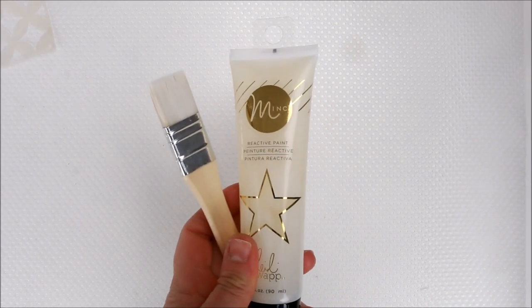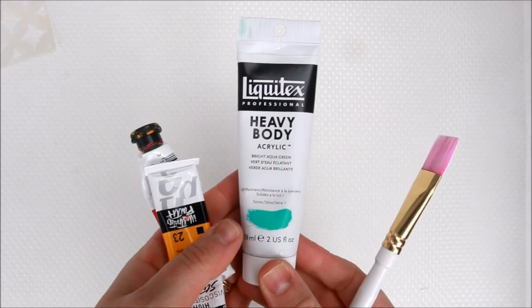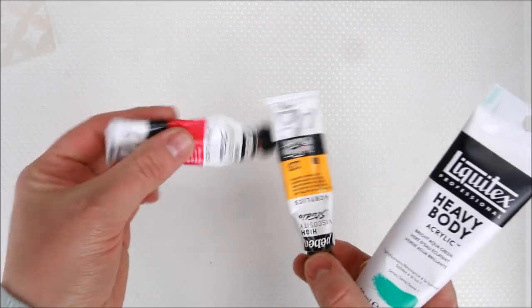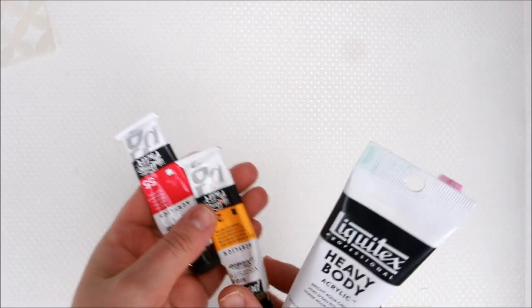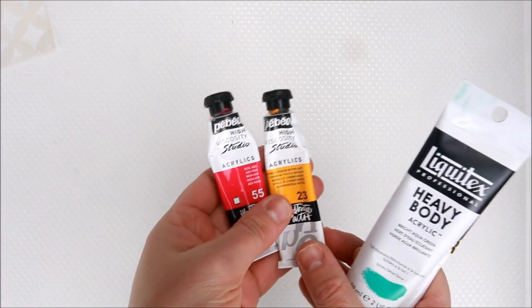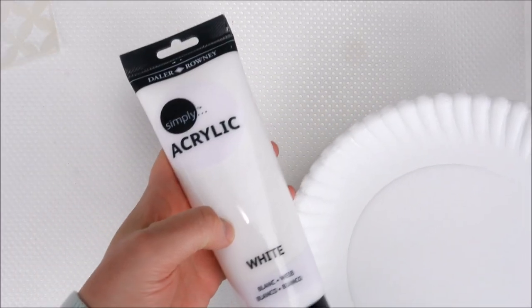First I'm going to need some watercolor paper that I've cut to size, see the dimensions in the description box below, some stencils. You're going to want to use the Mink reactive paint and a clean paintbrush, along with your favorite colors of acrylic. I have these in the description box below so you can see which ones I'm using specifically for this page. You're also going to want to use white acrylic paint along with a cosmetic sponge, most importantly a nonstick craft mat. So let's get started.